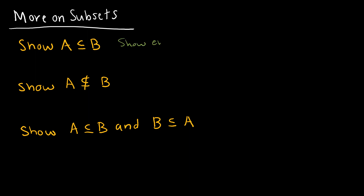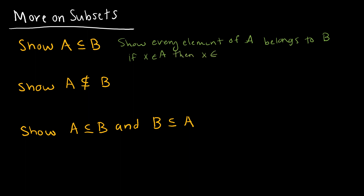To show that A is a subset of B, you have to show that every element of A belongs to B — that is, if x belongs to A then x belongs to B. This is important because there will be proof involved, and this is how we approach that proof: show that if an element belongs to A, it belongs to B as well.